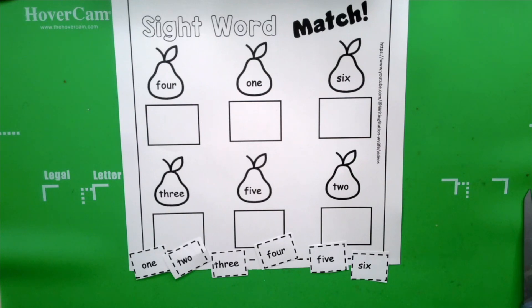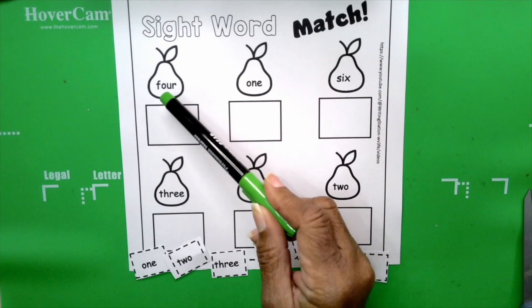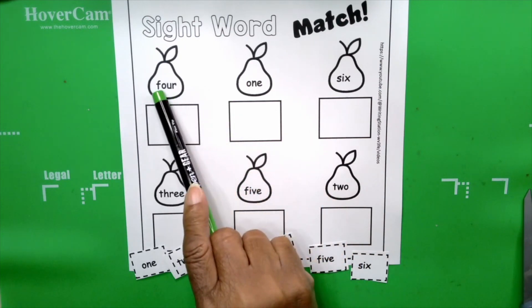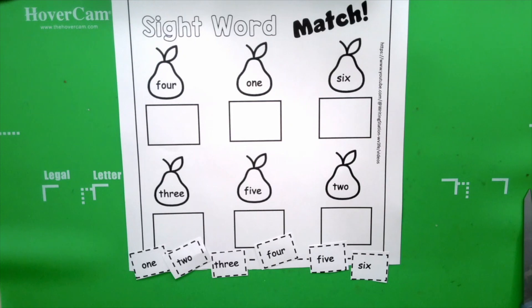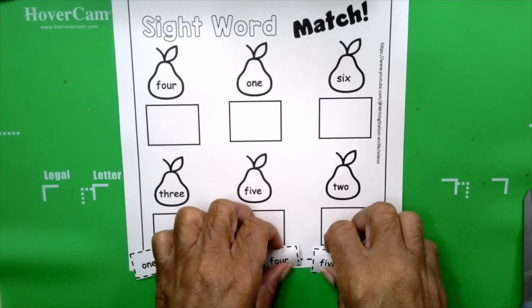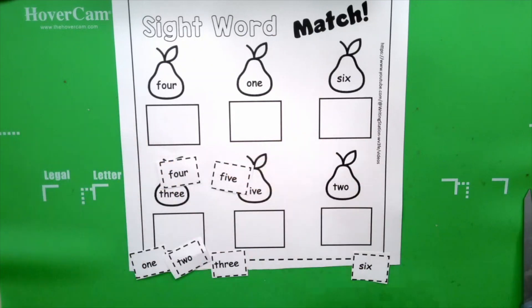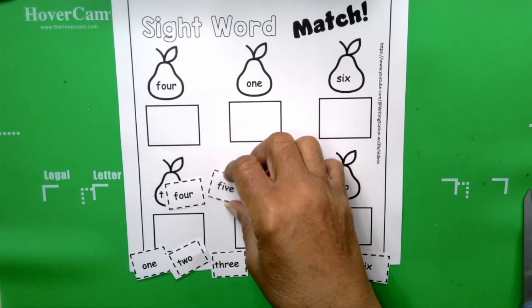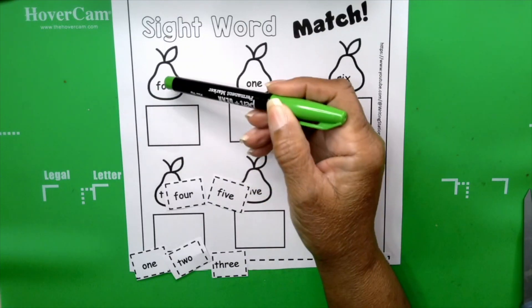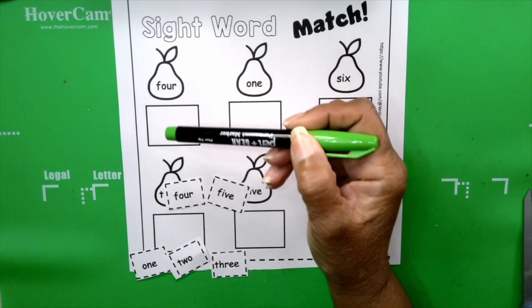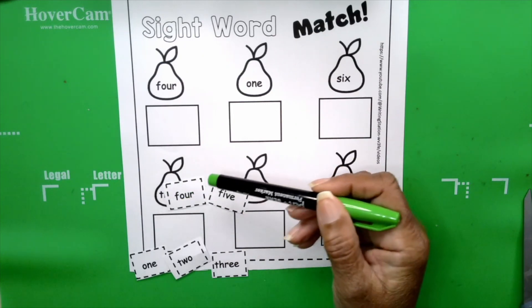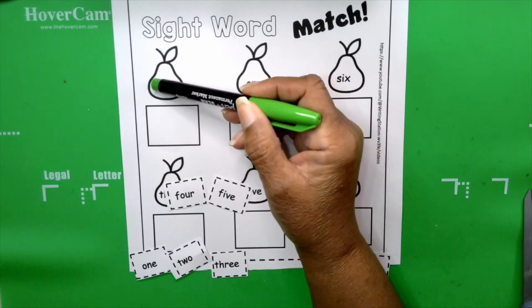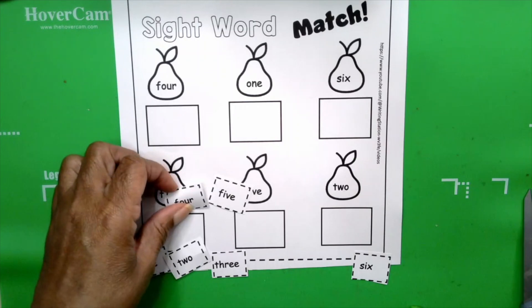The first word is four. Say it, boys and girls, four. How do you spell the number four? The number word four. F-O-U-R. Take a look at your words. Do we have a word, a number word that starts with F? Yes, we have two of them. Take a look at your screen. We have two words that start with F. Now, how do we know which is the correct word? Take a look. Take a look at this word, F-O. Do we have, is this one F-O? No, this one is F-I. Is this one F-O? Yes. F-O-U-R. F-O-U-R. Here's our correct word. Four.